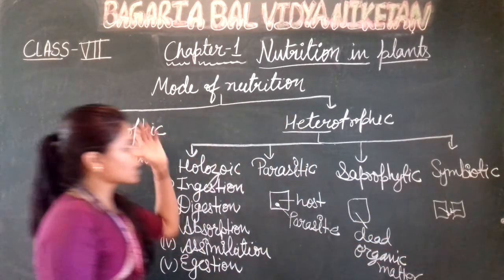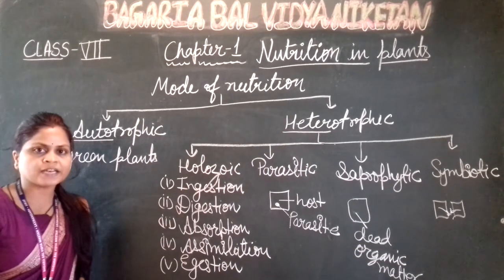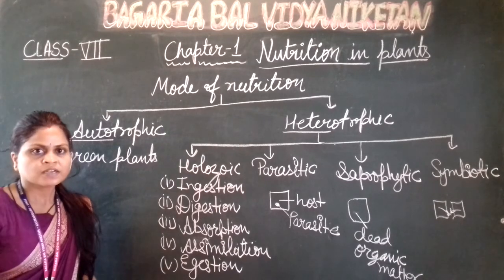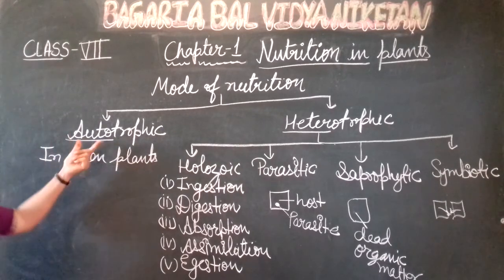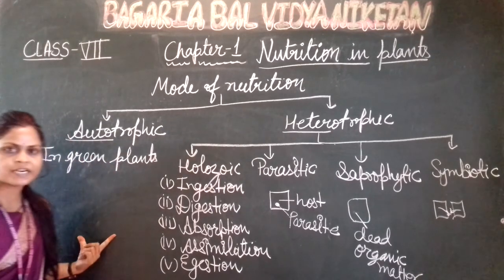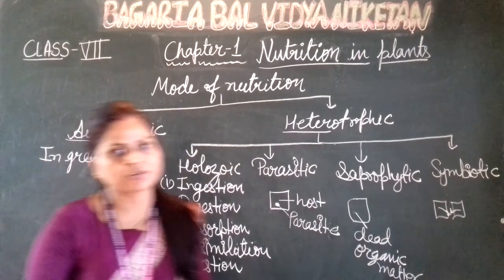So, these are the modes of nutrition in animals and plants. Plants में सिर्फ autotrophic type का देखने को मिलता है और इसी को हम आगे study करेंगे अपने next video में। Thank you.